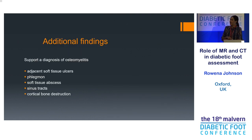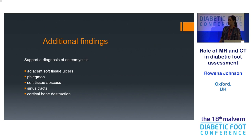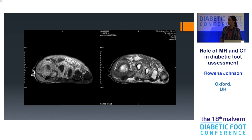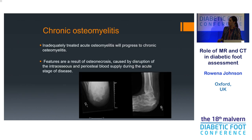Additional findings in the setting of osteomyelitis include soft tissue ulceration, phlegmon, abscesses, sinus tracts, and cortical bone destruction as I've shown. This coronal image shows ulceration and changes in the joint with all that reactive inflammation surrounding it.